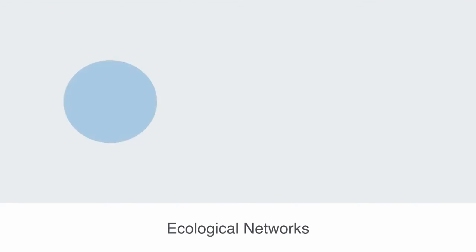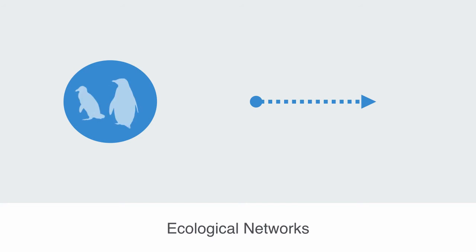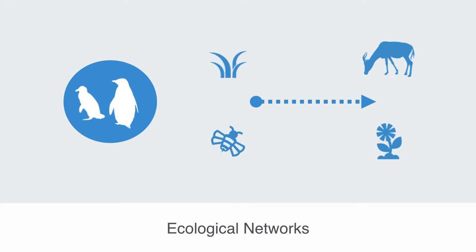A network contains nodes and links between those nodes. An ecological node may represent an individual plant or animal or a whole population or species. Interactions between them take many forms but are generally divided into antagonistic trophic interactions — what are called food webs — with interactions such as that between predator and prey, or mutualistic symbiotic interactions such as that between pollinator insects and flowering plants.